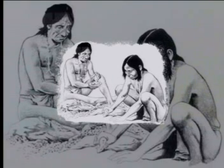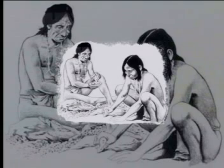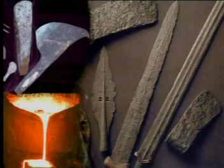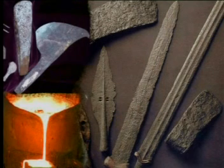People must have soon discovered that these reddish-brown pellets had amazing properties. Beating these pellets with a stone easily changed their shape. People could flatten them, bend them into whatever shape they wished, and the copper didn't shatter. The new material, copper, must have seemed quite magical, because it had properties quite unlike any other available material.